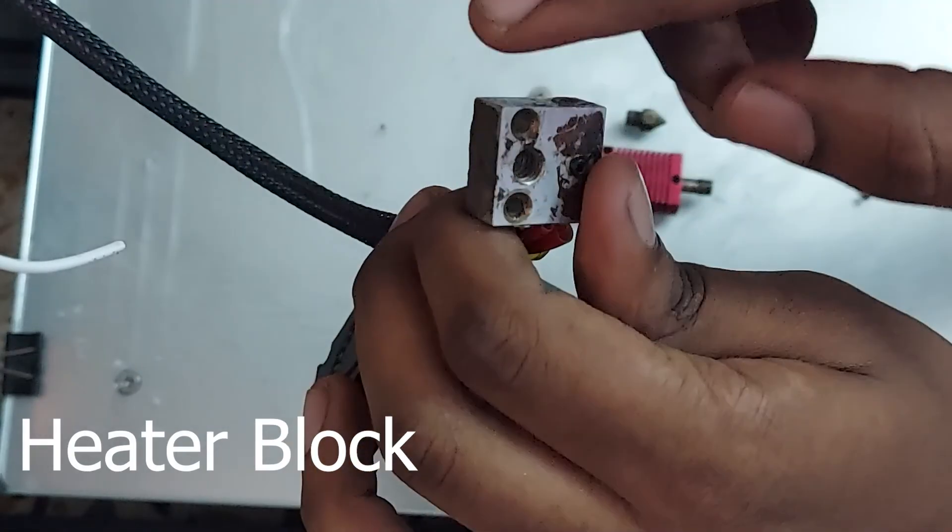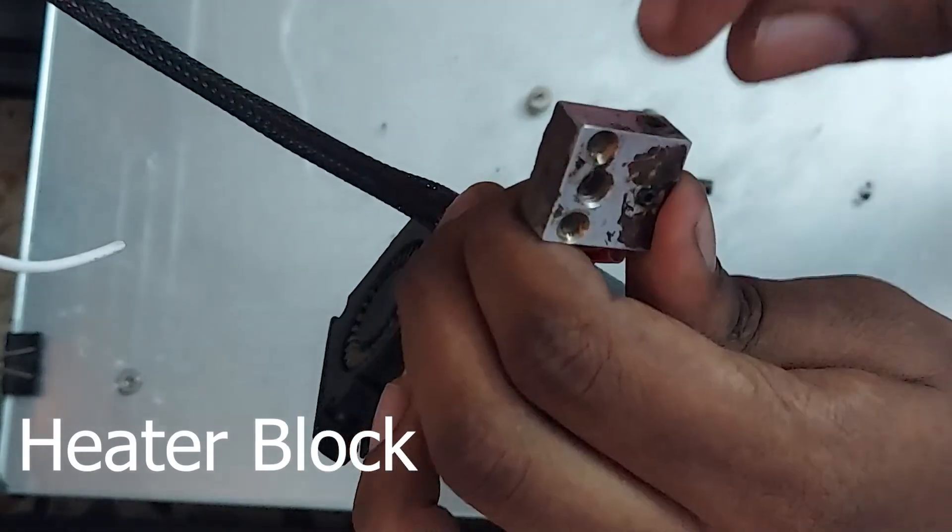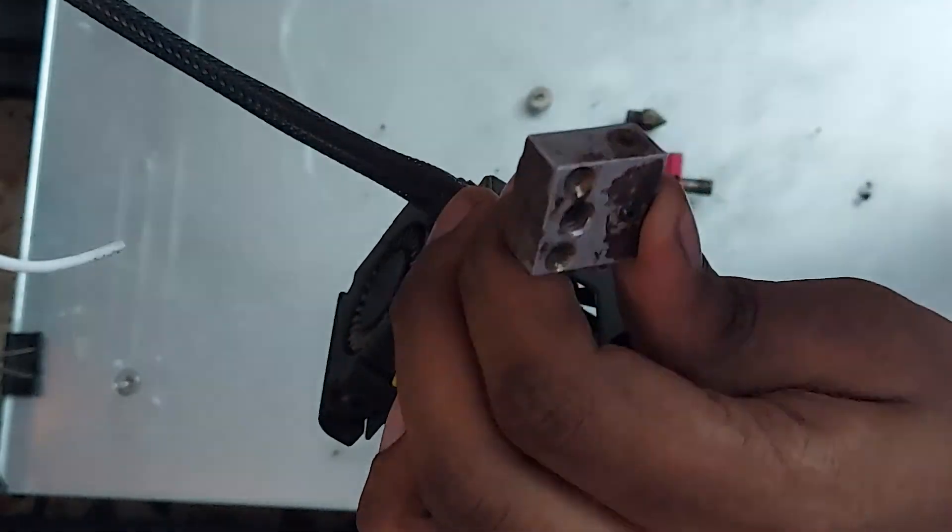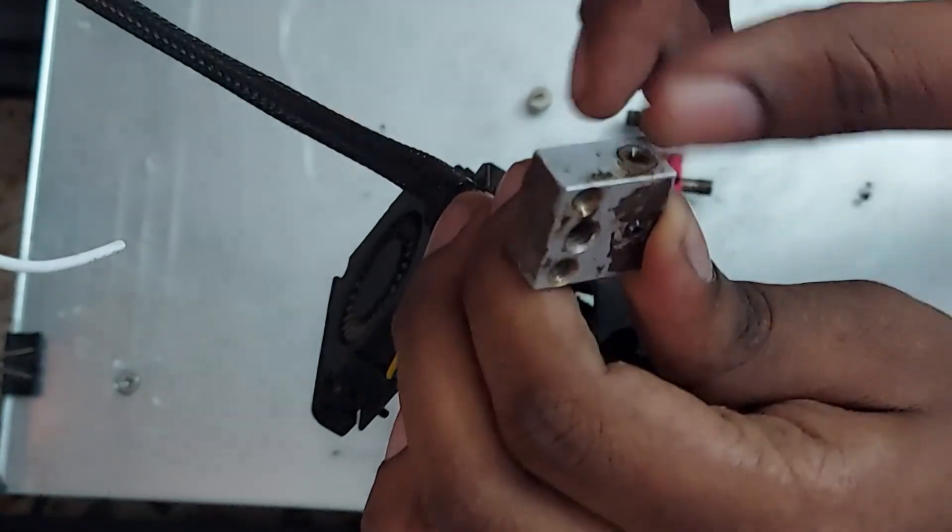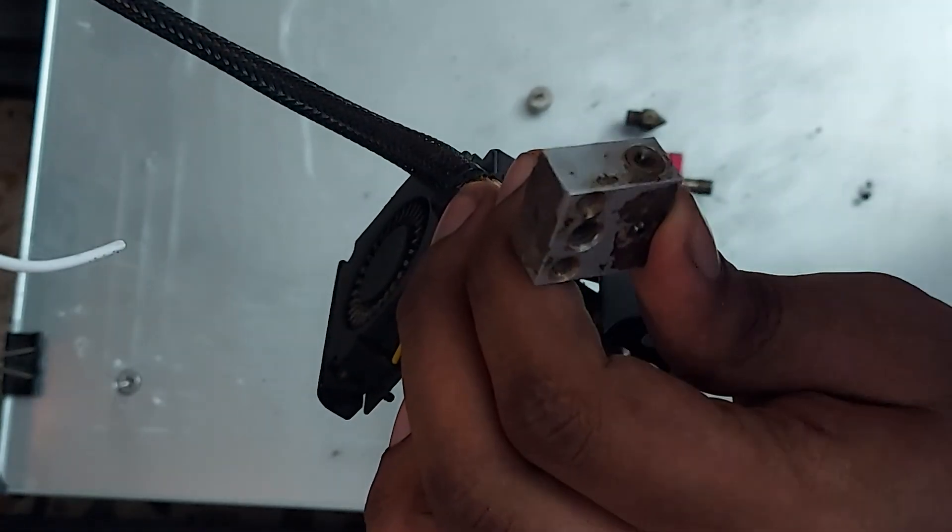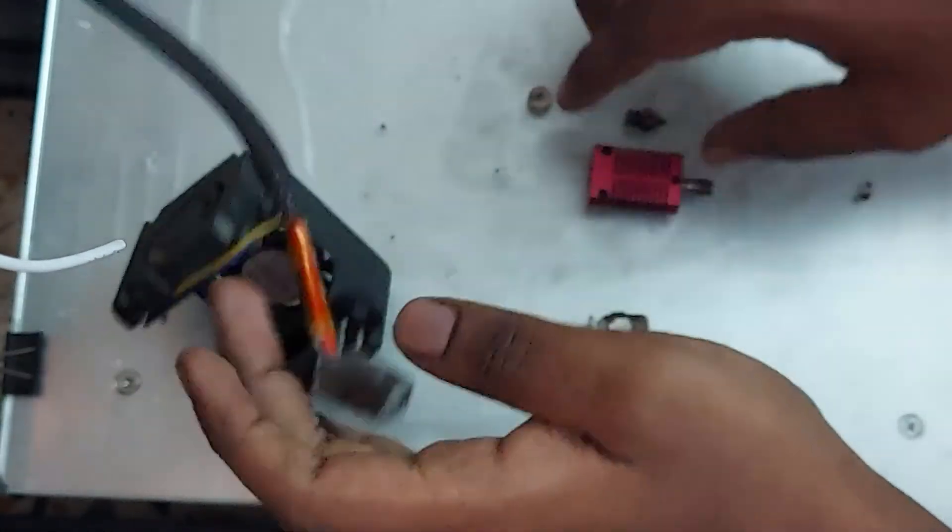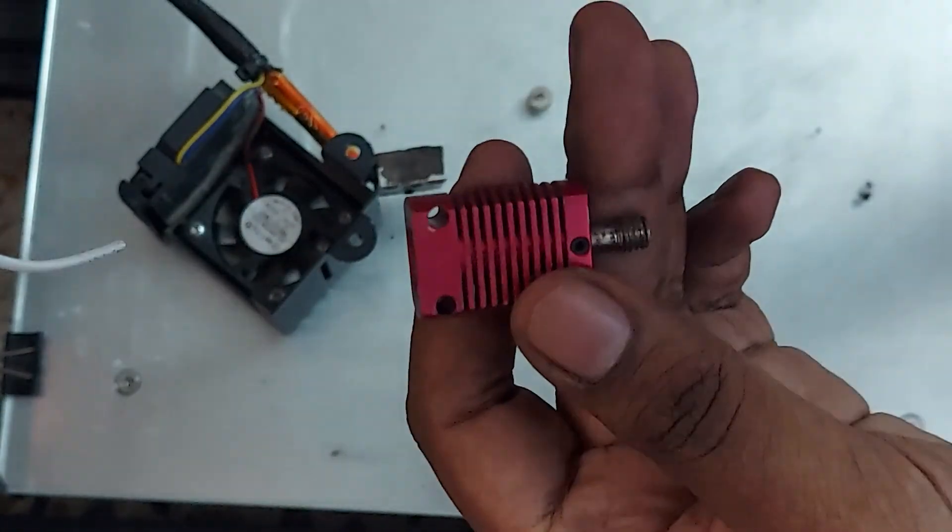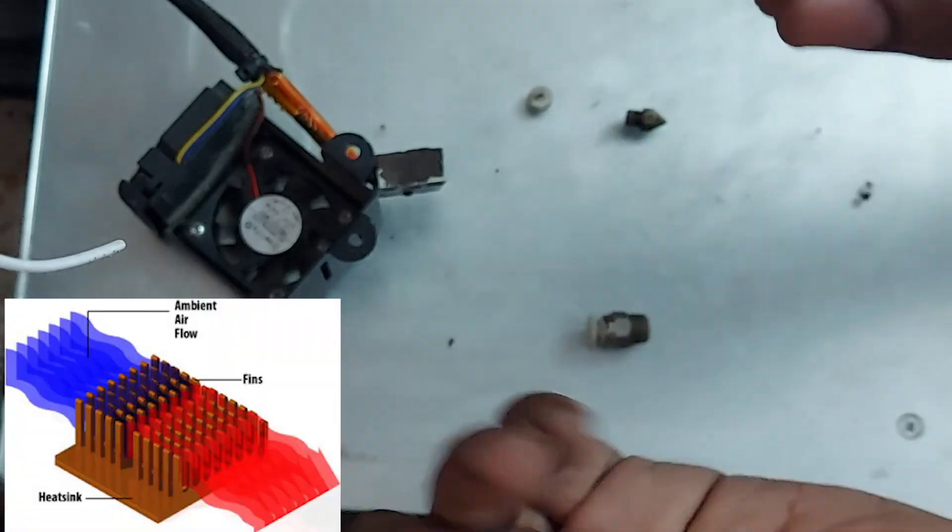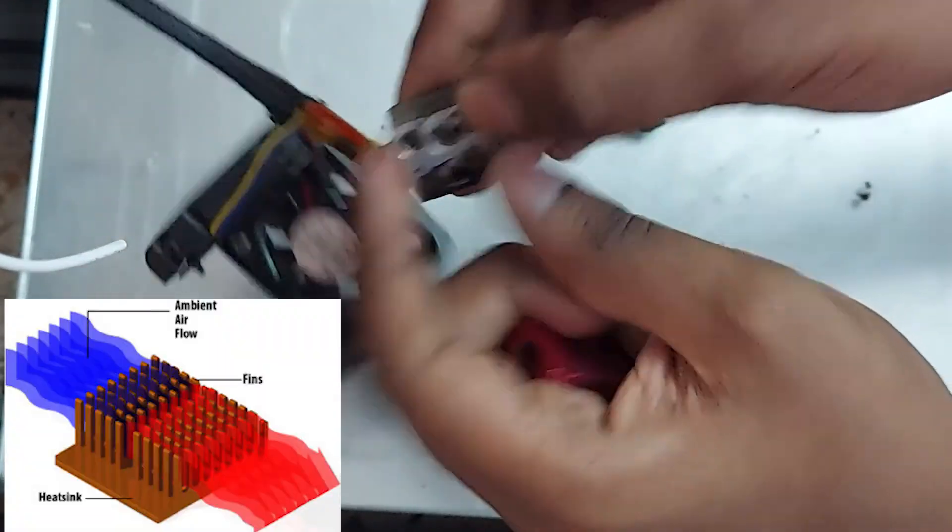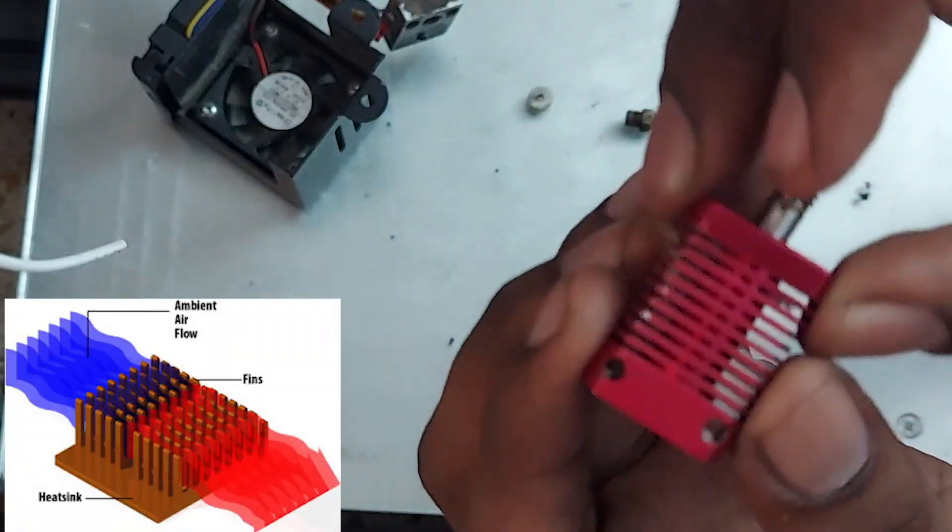This heater block - the silver one is called heater block - this will be heated to 220 Celsius and kept constant at the same temperature throughout the print. And the red one is called heat shrink.